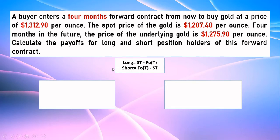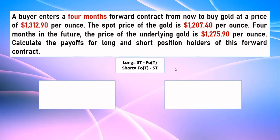The formula for long is: Long = S(T) minus F(0,T). S capital T means the future spot price, and S small t means the initial spot price. We are not going to work with the initial spot price here, but it's important to know which one is the initial spot price and which is the future spot price. S capital T is the future spot price, which comes after four months, and F(0,T) means the forward price.